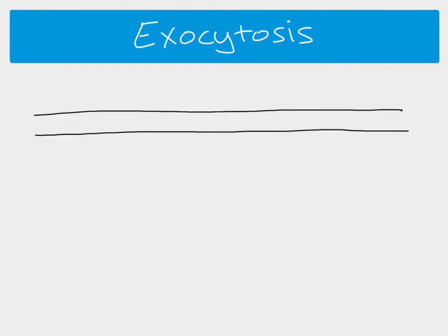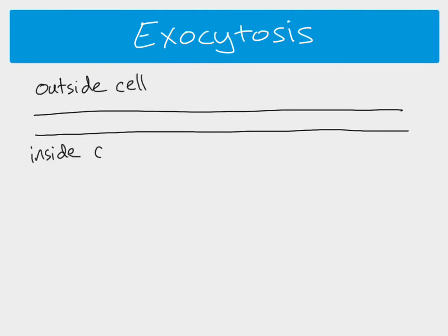Exocytosis also takes place across a membrane — this is the cell surface membrane, which is of course a phospholipid bilayer. We have the outside of the cell and the inside of the cell. In exocytosis we're moving substances from the inside to the outside.